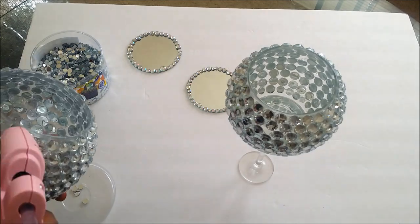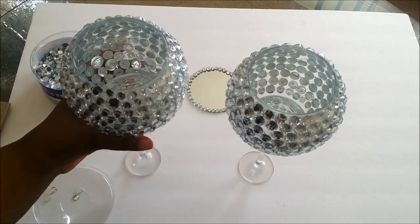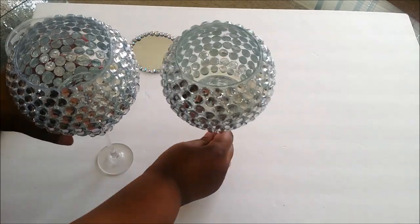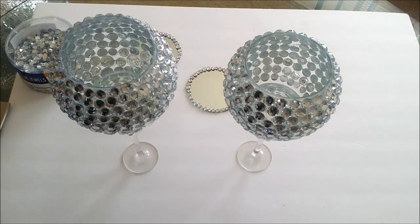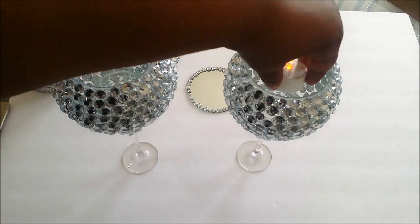And as you can see here, I'm putting the jewels two at a time because the hot glue gun dries really quickly. So you want to put a little bit of glue and put two at a time. If you try to put a little bit more, I feel like it doesn't properly secure it to the glass.